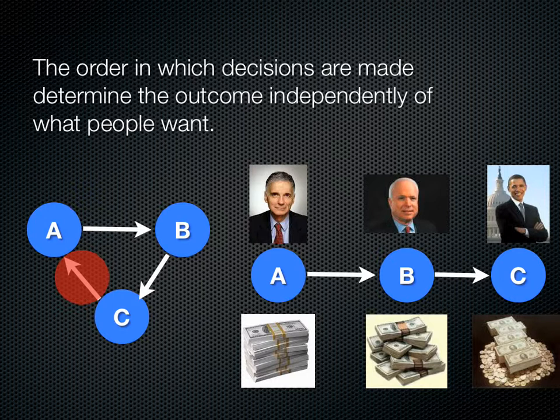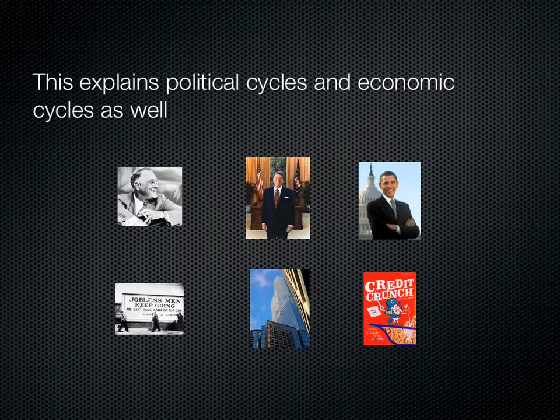The order in which decisions are made determines the outcome of the decision process independently of what people really want. This can be used to guide a political discussion or an economic discussion, or it can just happen on its own, depending on the random ordering of events. This explains political cycles and economic cycles as well.